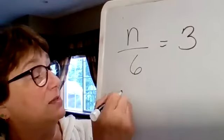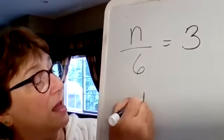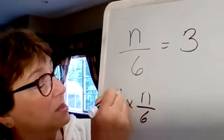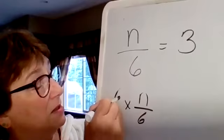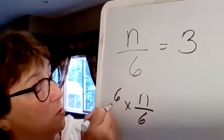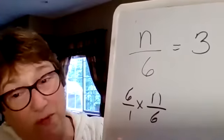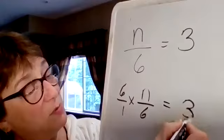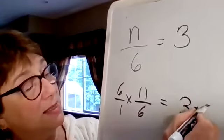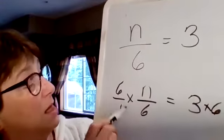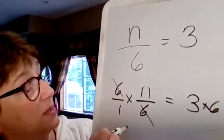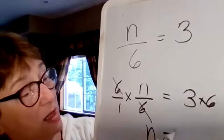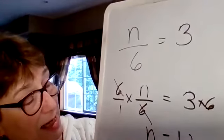The opposite of division is multiplication. So let's rewrite this. n over 6, and then we're going to times 6. And you can always write the 6 over 1 because you can always put any number over 1 as itself. It's going to give us 3, but we have to multiply this side by 6 as well. We can cross these two off because they're the same. And that leaves us with n. Just one little old n. And what's 3 times 6? 18.